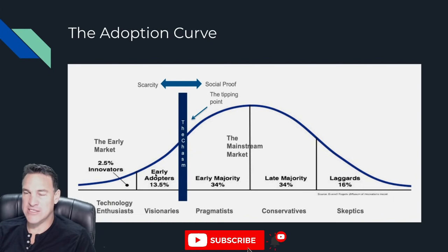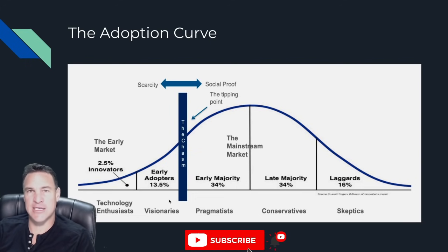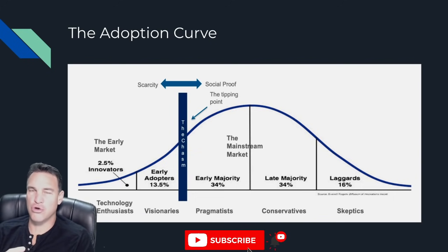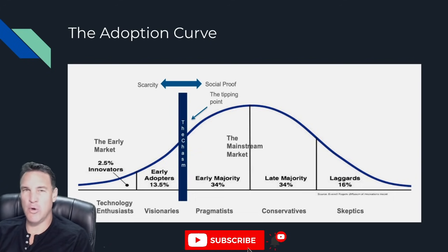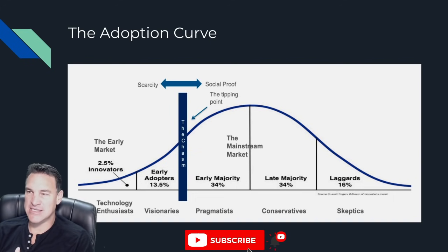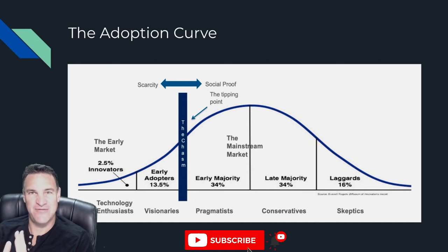Notice these numbers: two and a half percent of the population are innovators, and about 13 and a half percent are the early adopters for any given market. Then there's what's called the chasm — or in some places the tipping point — two different names for kind of the same thing. This is the point on the curve where all of a sudden the technology becomes so good, so powerful, so easy to use, that the masses absolutely come in. Nearly 70 percent of the entire population comes in in a very, very short amount of time.